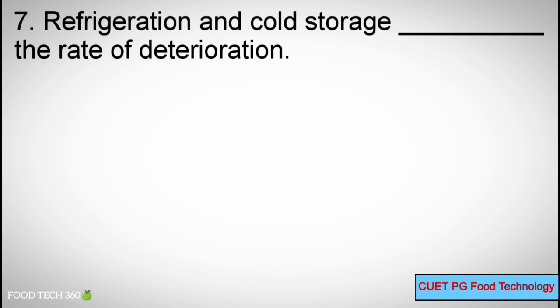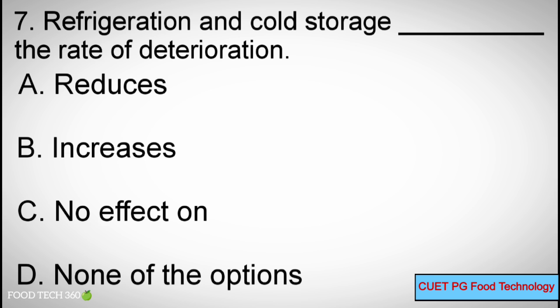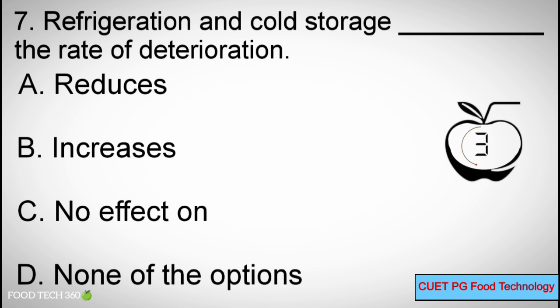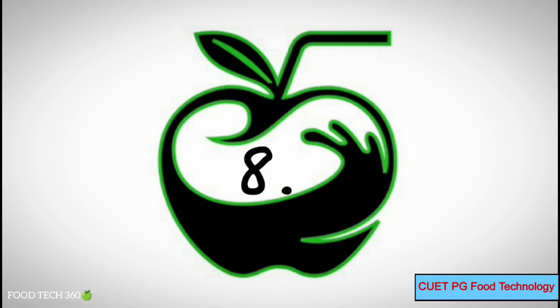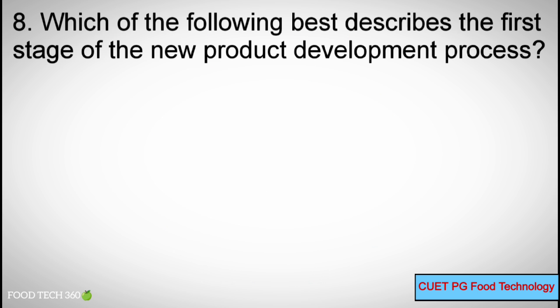Q7: Refrigeration and cold storage _____ the rate of deterioration — A. Reduces, B. Increases, C. No effect on, D. None of the options. Correct answer: A. Reduces.